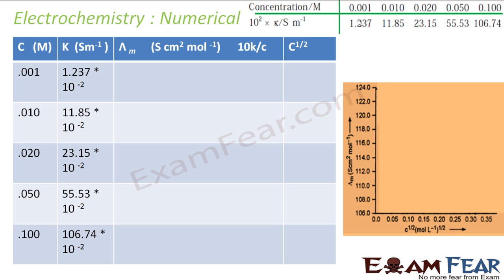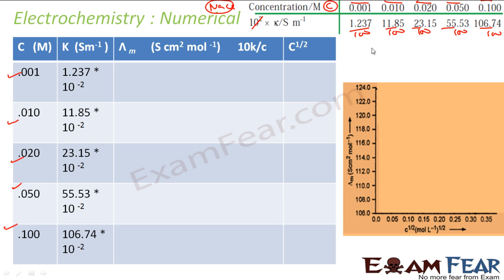The NaCl concentrations C are: 0.001, 0.01, 0.02, 0.05, and 0.1. The conductivity values are given as 100 × K, so everything has to be divided by 100 to get K. Now λm is nothing but K divided by C.